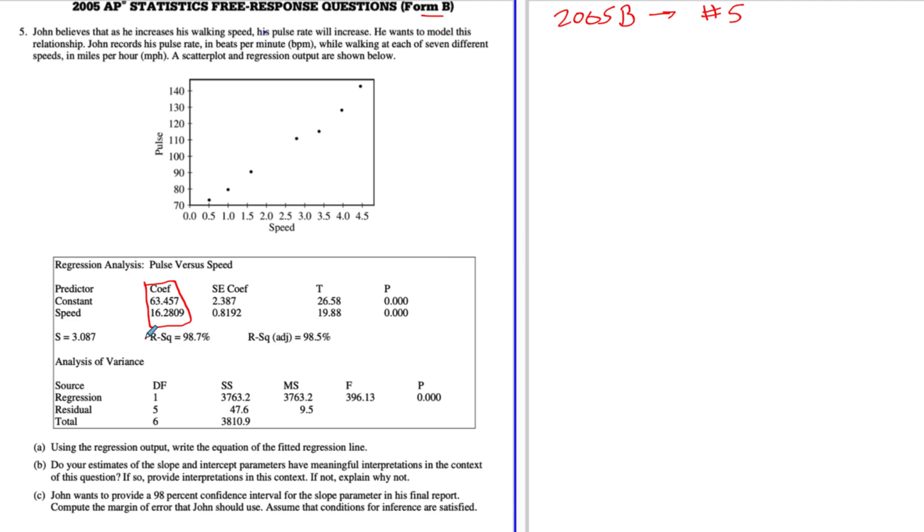Also notice we have an R squared value. So we could figure out R by taking the square root of that if we need to. Keep in mind that we're not always sure when we do that if R is positive or negative, but because of the scatter plot here, we know that it is positive if they ask us to do that. Otherwise, what do we have? The standard error of the coefficient, that's going to come up a little bit later. And that's about it. So let's get to the problem.